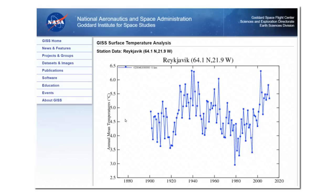Now let's take another look at why climate alarmists start their sea ice graphs in 1979. 1979 was the coldest year on record in Iceland after 40 years of sharp cooling. Temperatures in Iceland are cyclical, not linear.